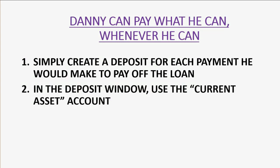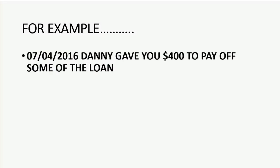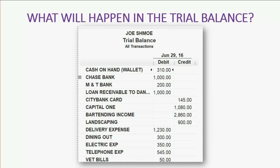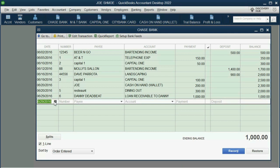When Danny makes a payment, simply create a deposit for each payment to pay off the loan. In the deposit window or the register, use the same current asset account you used to record the loan. For example, on July 4th of 2016, Danny gave you four hundred dollars. The loan would decrease from a thousand dollars to six hundred dollars, and Chase Bank will increase.